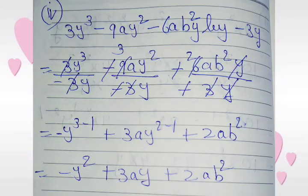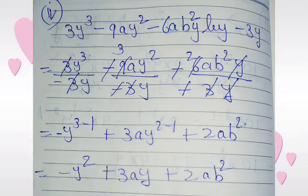Sub-part 4: 3y cubed minus 9y squared minus 6ab squared y divided by minus 3y. We divide each term by minus 3y. 3y cubed ÷ (minus 3y) gives minus y squared; minus 9y squared ÷ (minus 3y) gives plus 3y; minus 6ab squared y ÷ (minus 3y) gives plus 2ab squared. In division we subtract the powers of the same base.